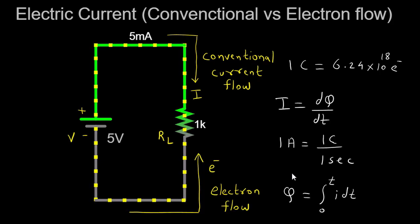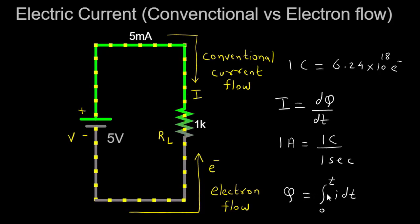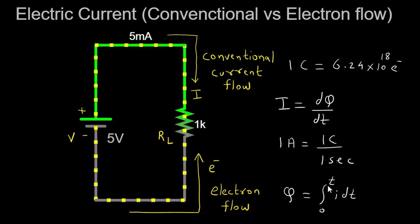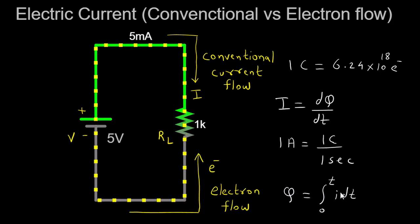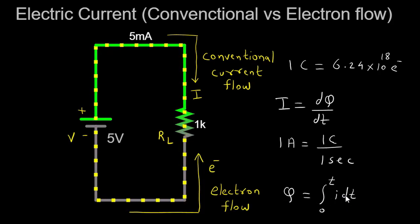To determine the total charge passing through a circuit over a specific period of time, we utilize the concept of integration. Integration involves summing up small amounts of current over infinitesimally small time intervals. The resulting sum provides the total charge flowing through the circuit during that time period. Mathematically, we express this as q = ∫i dt, where q represents the total charge, i denotes the current, and the integral symbol indicates the process of integration.